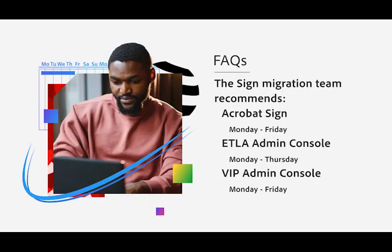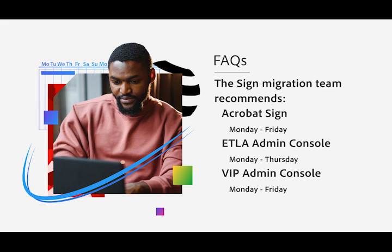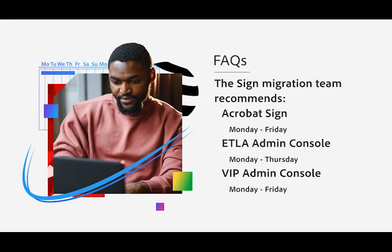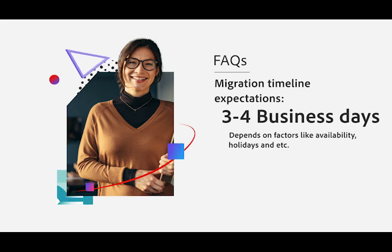The Sign Migration team recommends that you migrate to your Acrobat Sign account on a weekday. If you are a customer migrating to an ETLA Admin Console, we recommend choosing a time between Monday and Thursday. If you are a customer migrating to a VIP Admin Console, we recommend a time frame between Monday and Friday. Usually, the migration takes 3–4 business days, depending on factors like your availability, holidays, etc.